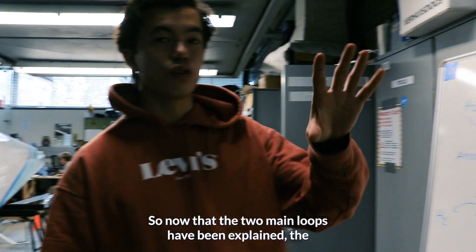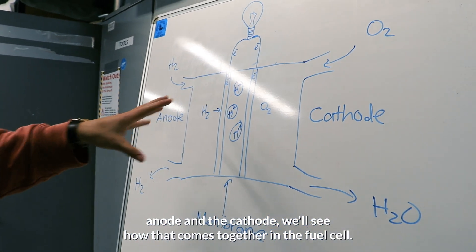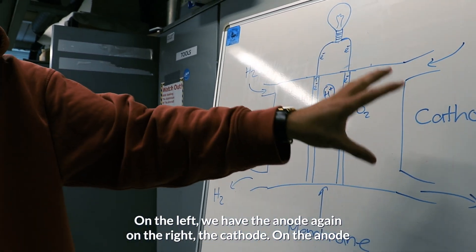Alright. So now that the two main loops have been explained, the anode and the cathode, we'll see how that comes together in the fuel cell. So this is a simple schematic of the fuel cell. On the left we have the anode again, on the right the cathode.